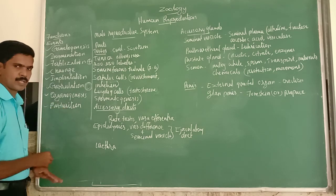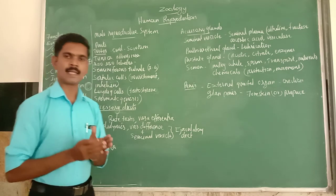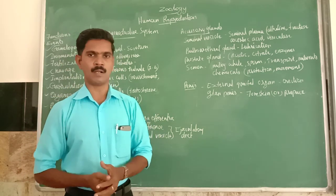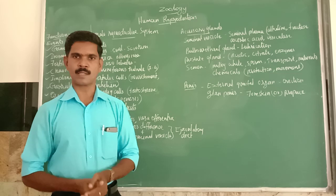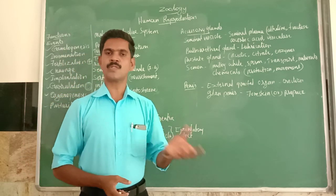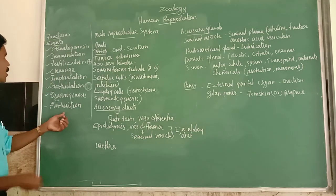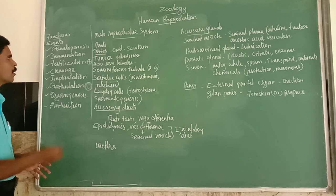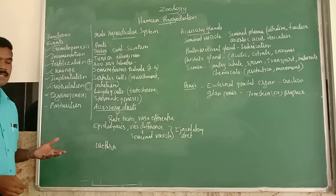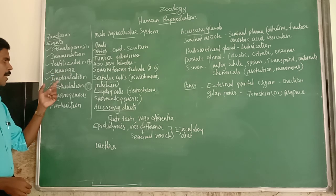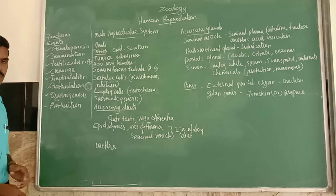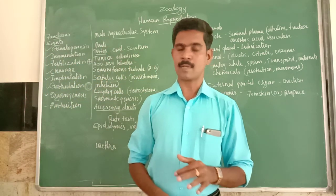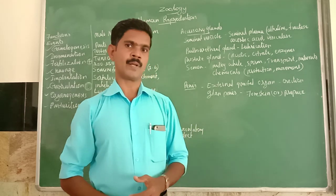The final event is parturition — the process of delivering the baby from the uterus to the outside environment. So the important events in the reproductive system are: gametogenesis, insemination, fertilization, cleavage, implantation, gastrulation, organogenesis, and parturition.